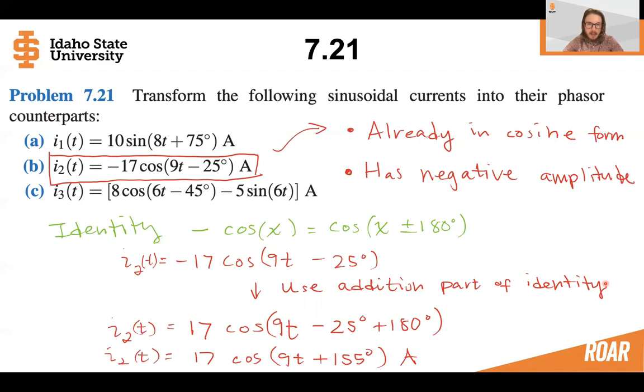And so we can add 180 degrees to minus 25 in order to make the amplitude positive. So we end up with I2 equals to 17 cosine 9t plus 155 degrees.